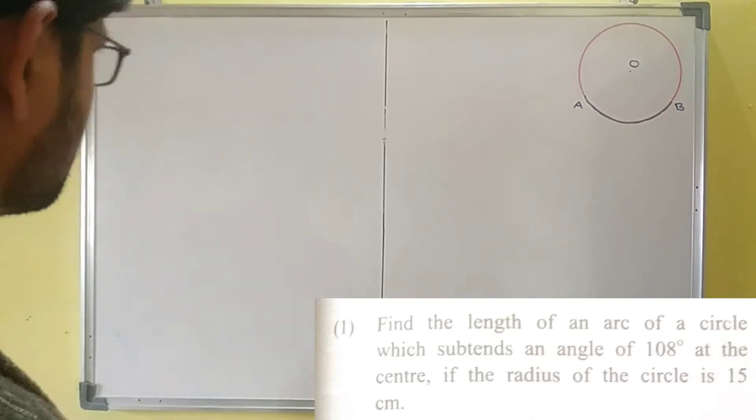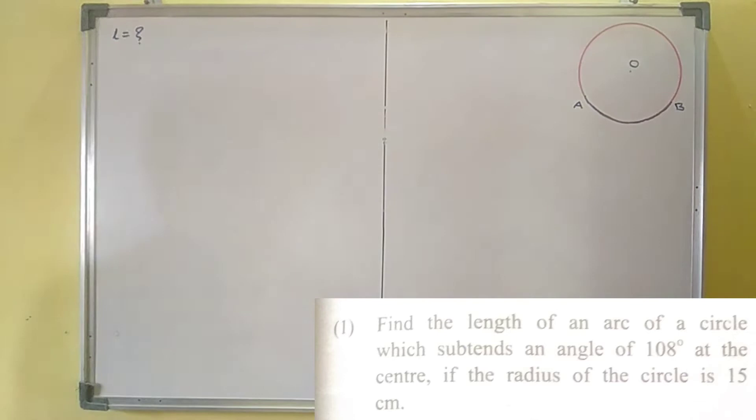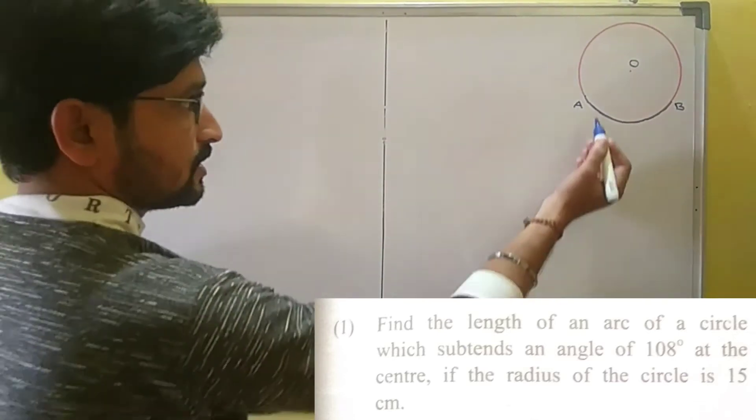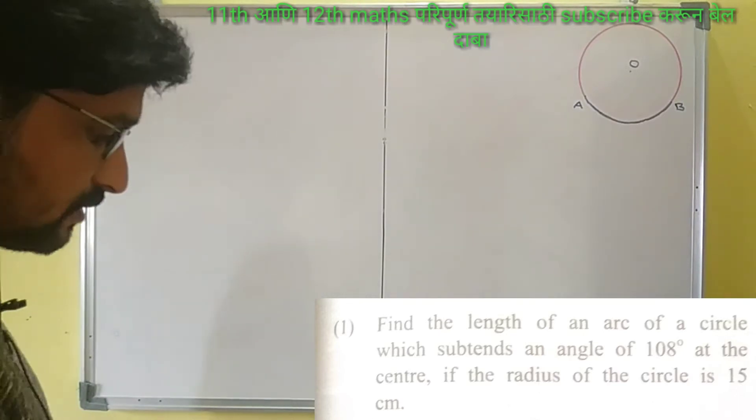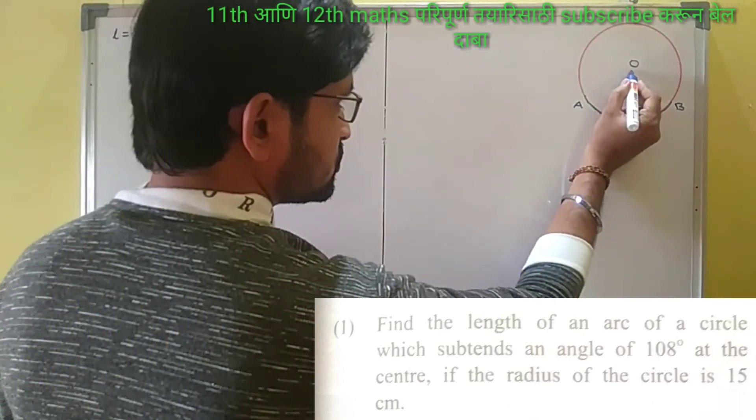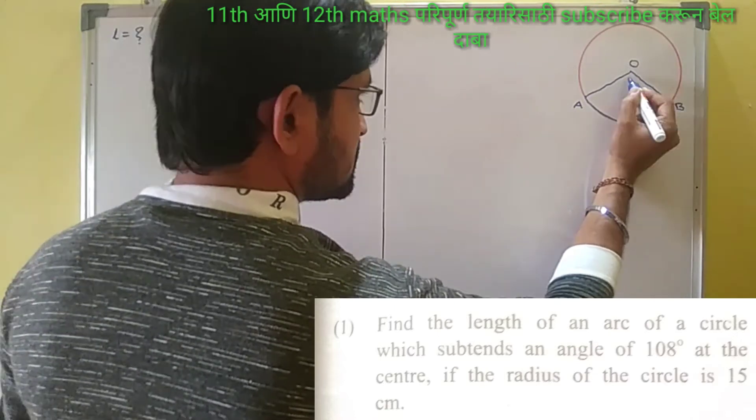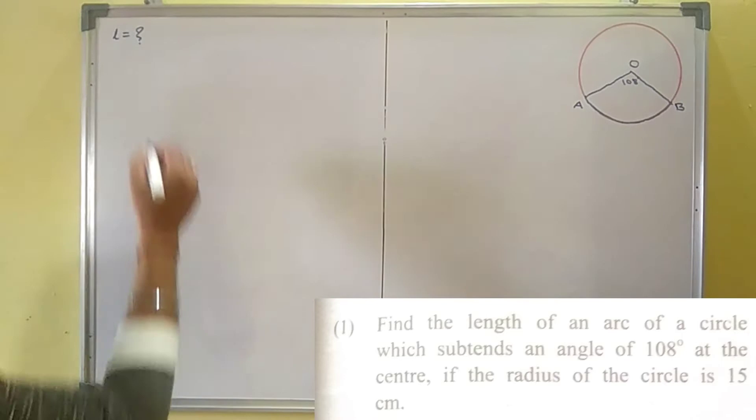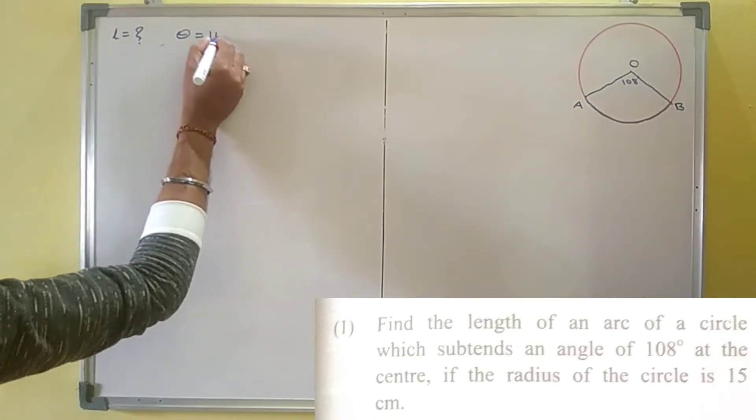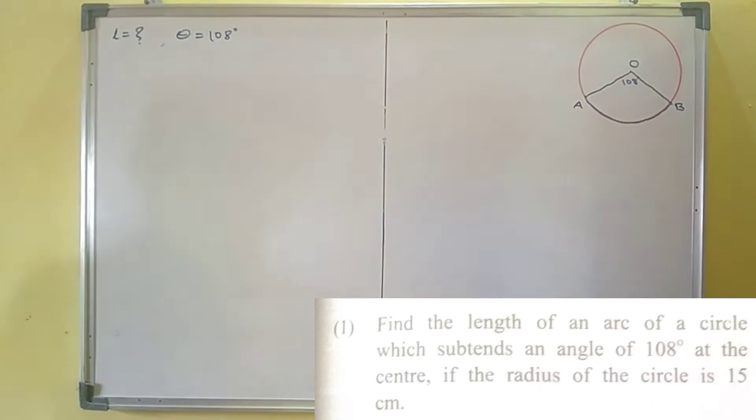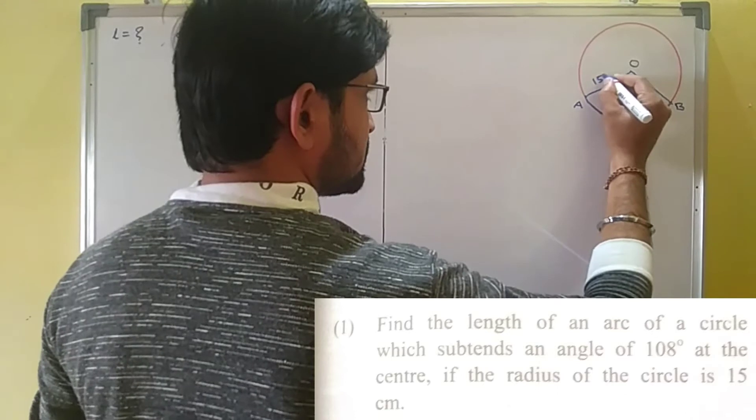Find the length of an arc, so here L is equal to question mark. We need to find the length of arc. Suppose AB is an arc, what is given here? An angle which is 108 degrees. So this angle is 108 degrees. Now write here theta is equal to 108 degrees. Again read the question. Radius is given, and radius is equal to 15 centimeters.